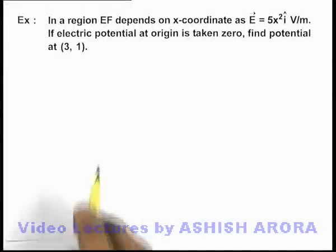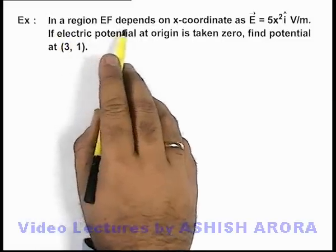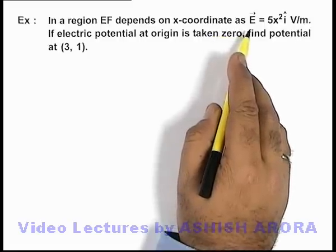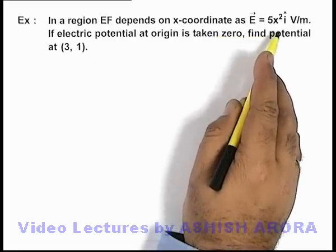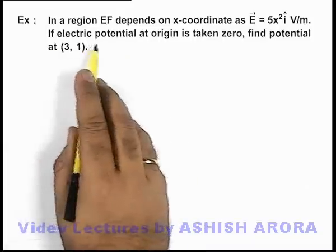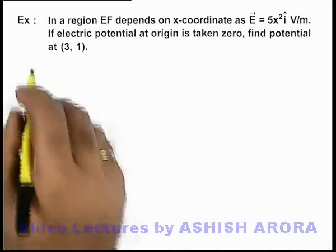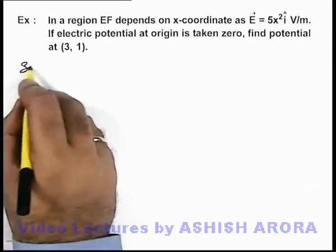In this example we are given that in a region electric field depends on x coordinate as E vector is equal to 5 x square i cap volt per meter. And if electric potential at origin is taken to be zero, we are required to find the potential at coordinate 3 comma 1.